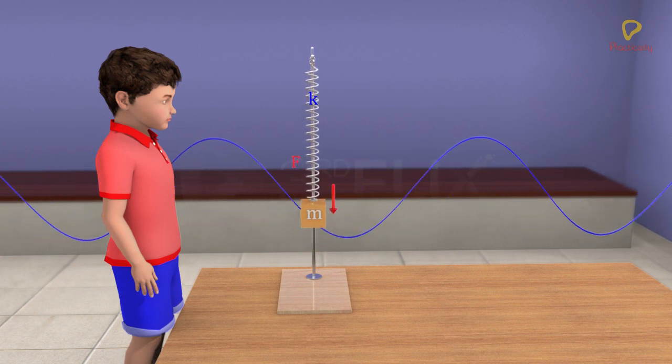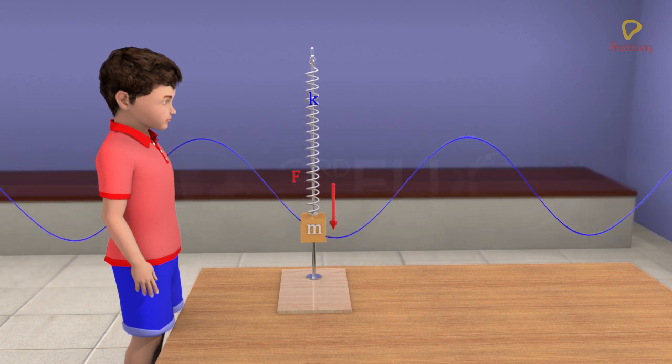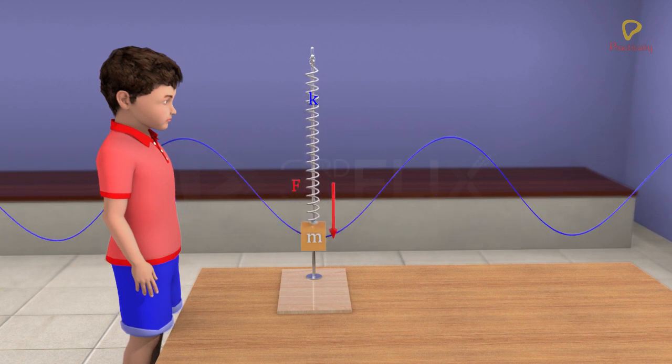Hence, the presence of a uniform external field, such as gravity, doesn't affect the time period of the oscillation.